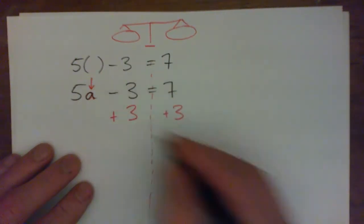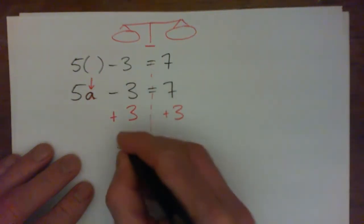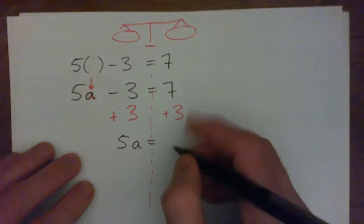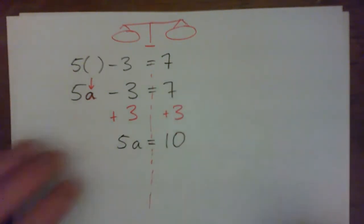Now we have negative 3 plus 3, which is 0, so we have 5a equals, and then 7 plus 3, 10.